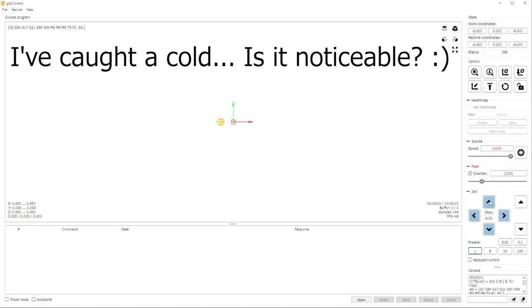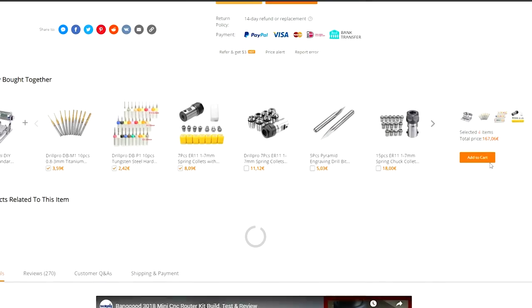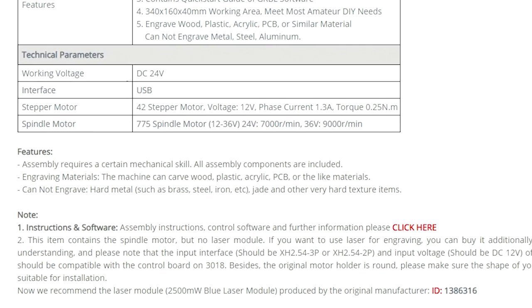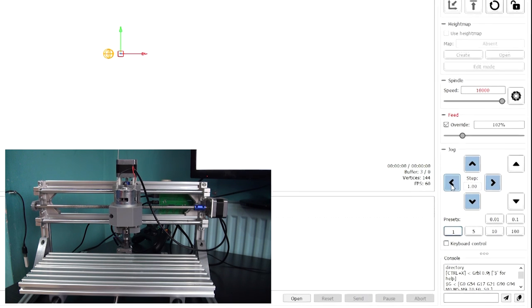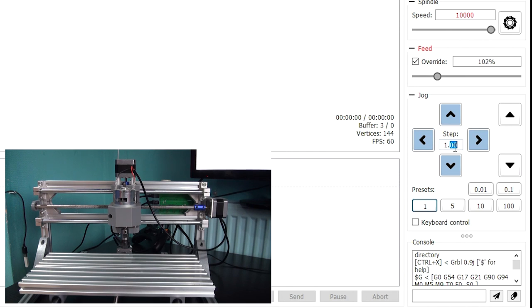The GRBL software that is used with this machine can be found on the Banggood product page. When the software is installed and everything is hooked up correctly you should be able to move the machine with the jog keys. Under the jog keys you can select the presets. Select a lower preset value for small jog movements and a higher preset value for the large movements.